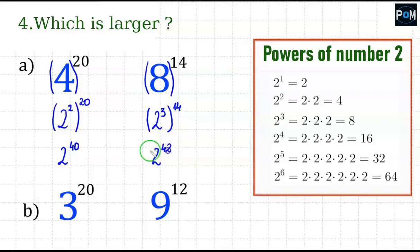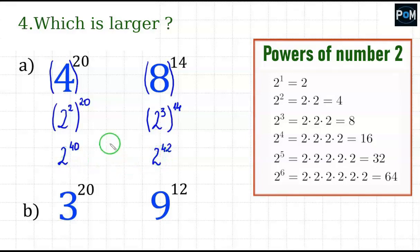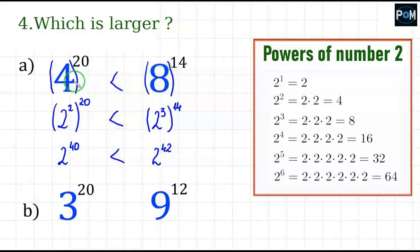And only now, when I have the same bases — 2 here and 2 here — I can compare them. Definitely, 2 to the power of 42 is larger, so this power is larger than the other one. This way, we determine which power is larger.